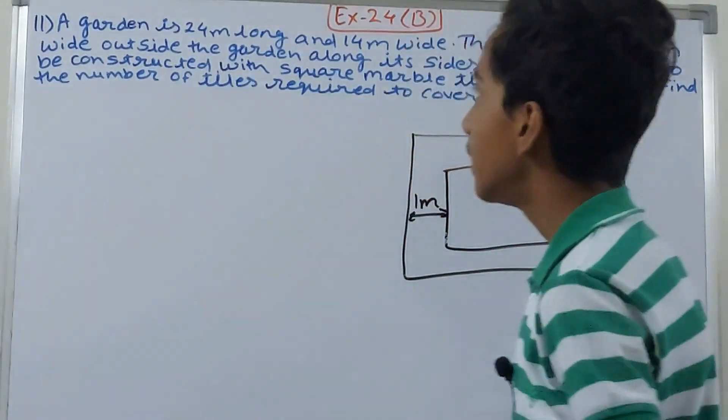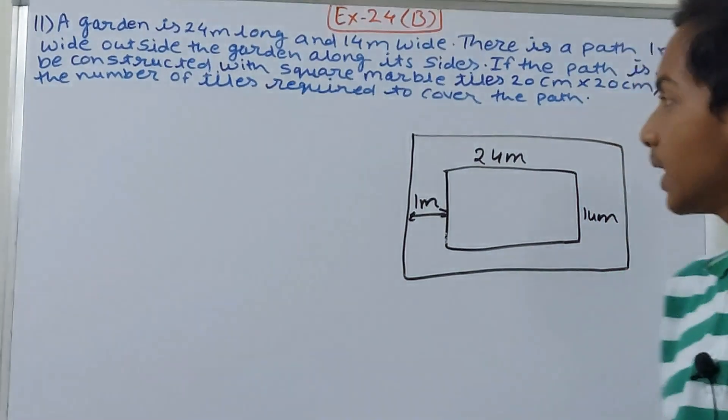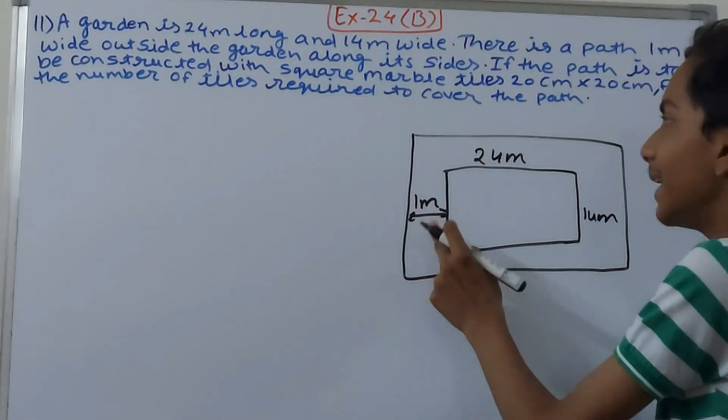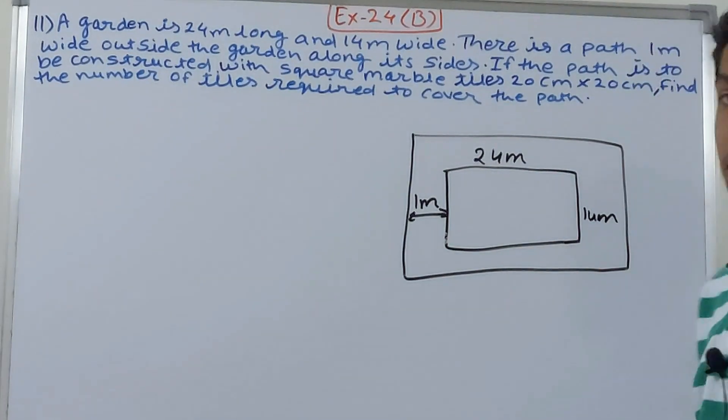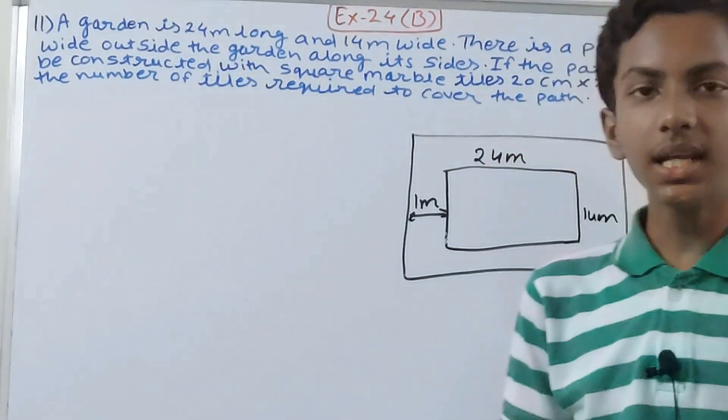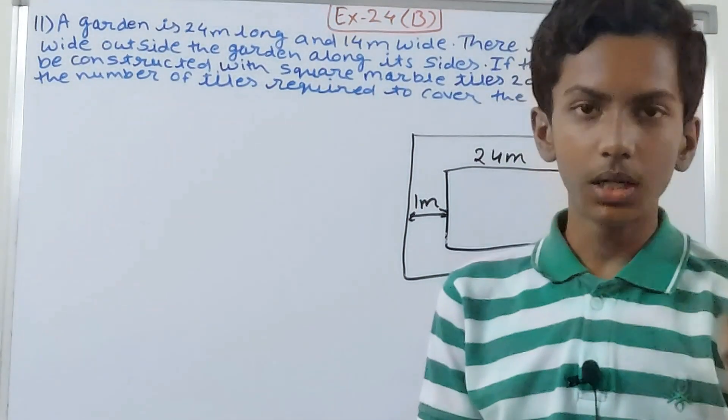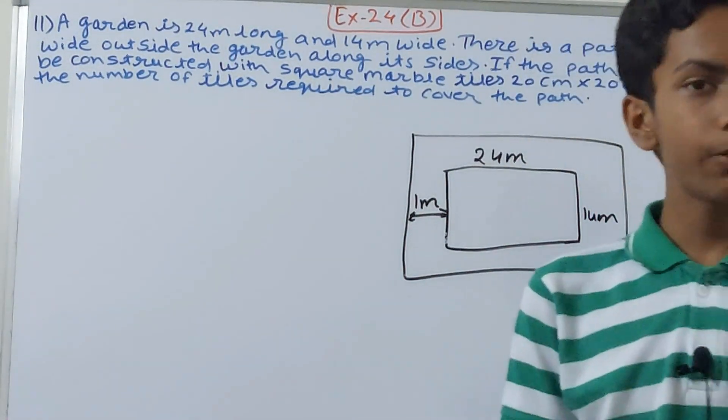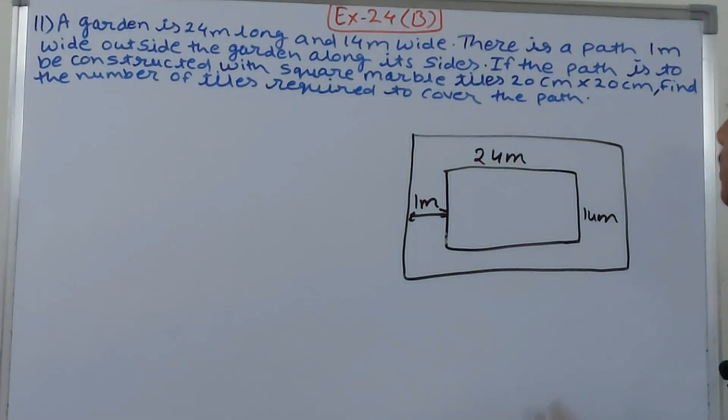Now for calculating, what do we need to calculate? It's being asked how many tiles are required to cover this path. That means we have to divide the area of the path by area of one tile.